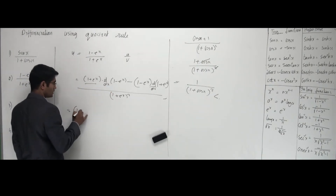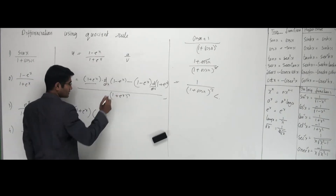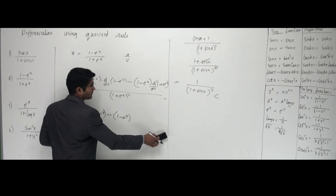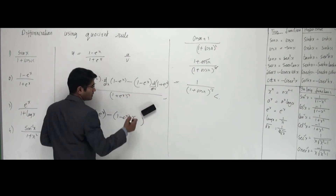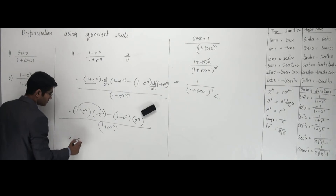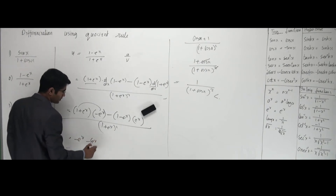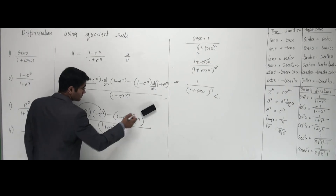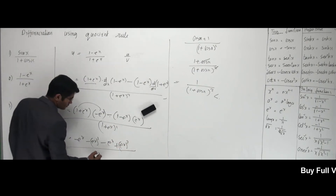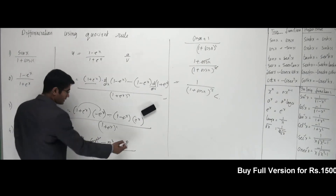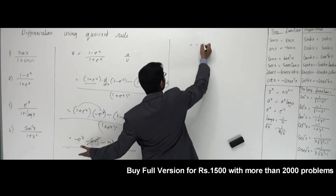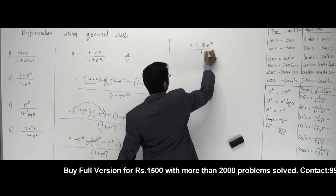Do I have any differentiation sign on the first term? No — so it goes like 1 plus e to the x. Differentiation of 1 minus e to the x: 1 is 0, e to the x is e to the x itself, and the negative sign remains — so that's minus e to the x. Minus 1 minus e to the x. Differentiation of 1 plus e to the x: 1 is 0, e to the x is e to the x. All divided by 1 plus e to the x, the whole squared. Opening the brackets: minus e to the x, minus e to the x squared — and then minus, minus is plus, giving plus e to the x squared. The terms cancel and we get minus 2 e to the x divided by 1 plus e to the x, the whole squared. That's your answer.